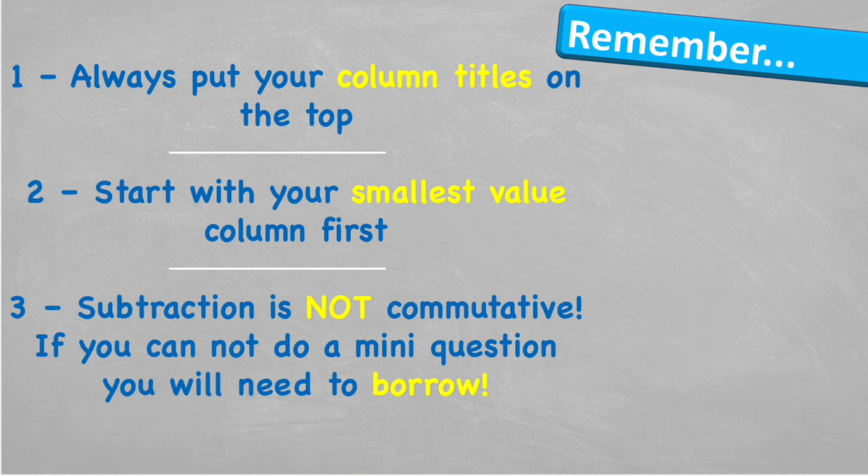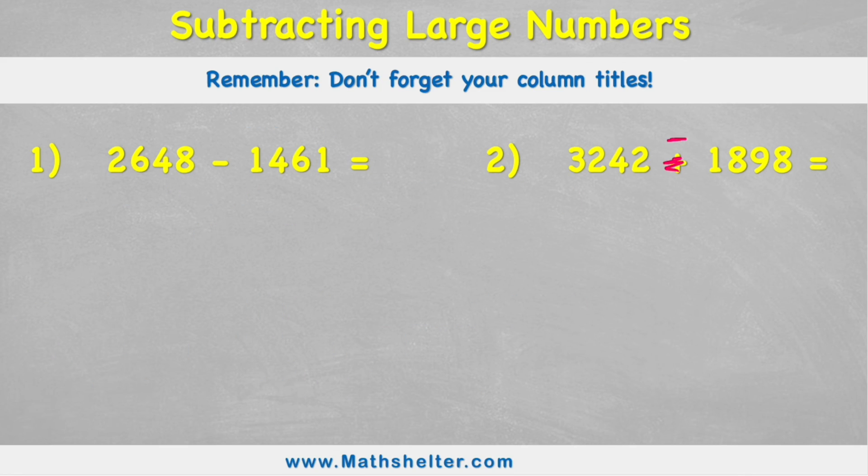Let's look at what to remember. Always put your column titles on the top of your question. This will help you just avoid any small mistakes. Then we're going to start with our smallest value, so in this case we were starting with our ones. And then subtraction is not commutative. This is really important. If we can't do one of our many questions, we will need to borrow from next door.